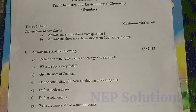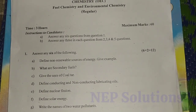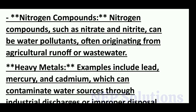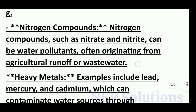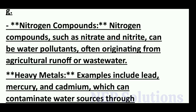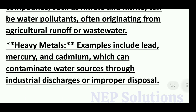Next question: Write the names of two water pollutants. The two water pollutants are: first, nitrogen compounds such as nitrate and nitrite, which can be water pollutants often originating from agricultural runoff or wastewater; and second, heavy metals — examples include lead, mercury, and cadmium — which can contaminate water sources through industrial discharges or improper disposal.